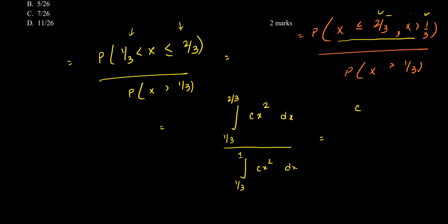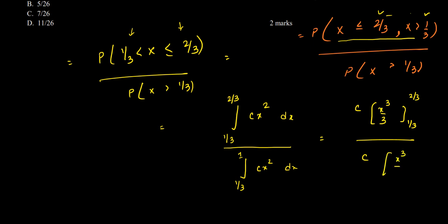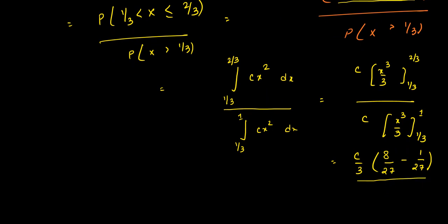Integrating x² gives x³/3. For the numerator: C/3 × [(2/3)³ − (1/3)³] = C/3 × [8/27 − 1/27] = C/3 × 7/27. For the denominator: C/3 × [1³ − (1/3)³] = C/3 × [1 − 1/27] = C/3 × 26/27. The C/3 terms cancel in numerator and denominator.